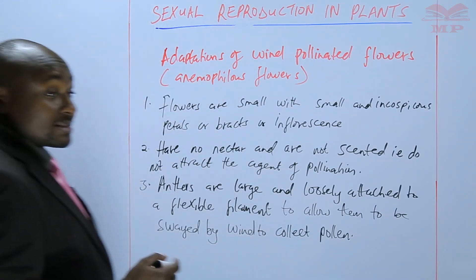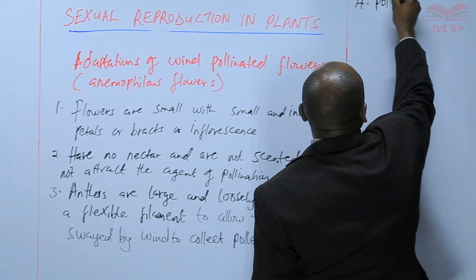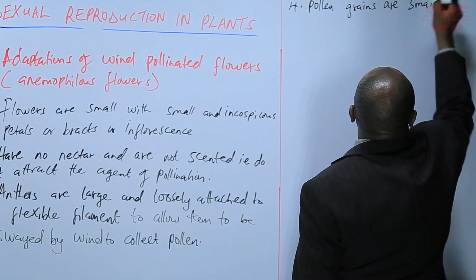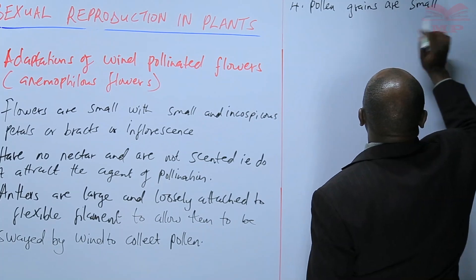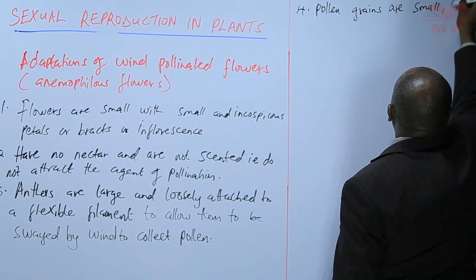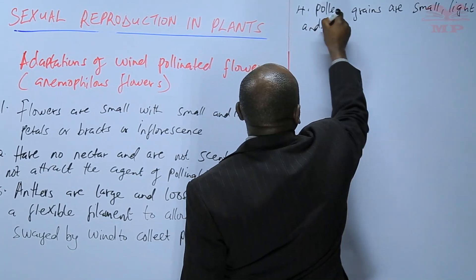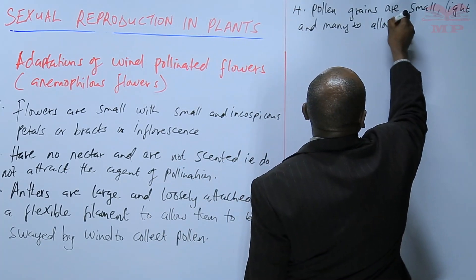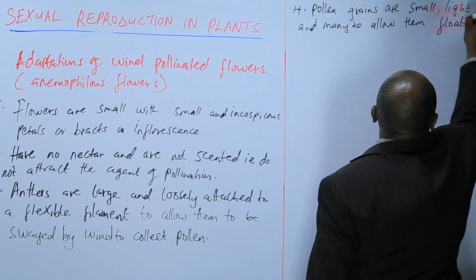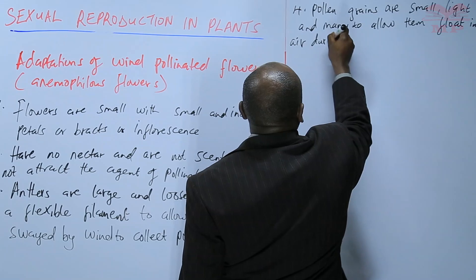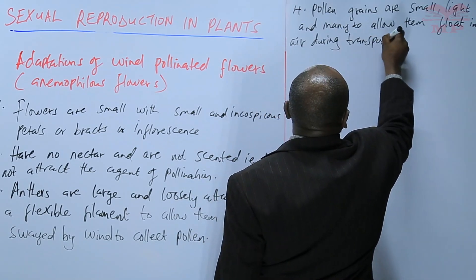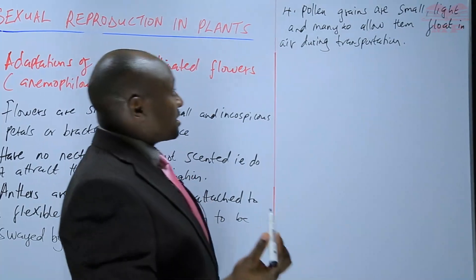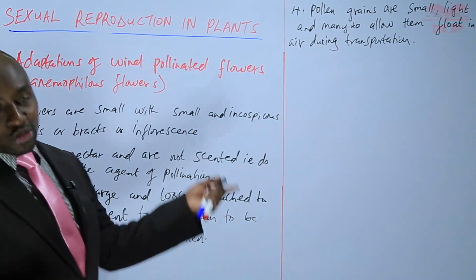How are the pollen grains themselves? The pollen grains are small, light, and many, to allow them to float in the air during transportation. That's why they need to be very light, very small, and many — because some of them will be lost along the way.